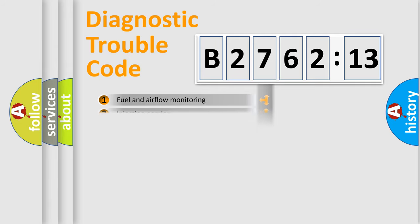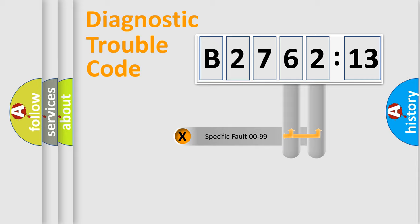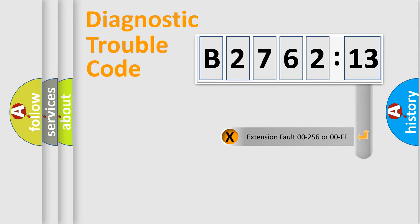The third character specifies a subset of errors. The distribution shown is valid only for the standardized DTC code. Only the last two characters define the specific fault of the group.